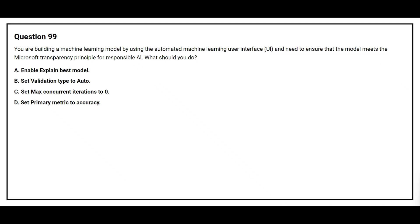Question number 99. You are building a machine learning model by using the automated machine learning user interface and need to ensure that the model meets the Microsoft transparency principle for responsible AI. What should you do? Option A, enable explain based model. Option B, set validation type to auto. Option C, set max concurrent iteration to zero. Option D, set primary metric to accuracy. The correct answer is option A, enable explain based model.